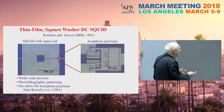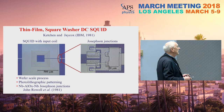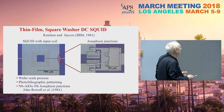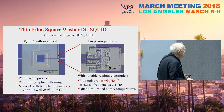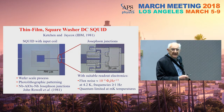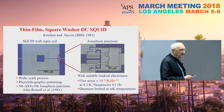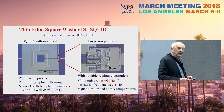These are made today on wafer-scale processes with photolithographic patterning, producing hundreds of thousands on a wafer. With suitable readout electronics at 4.2 Kelvin, a typical flux noise might be 10⁻⁶ flux quanta per root hertz in unit bandwidth. At sufficiently low temperatures, SQUIDs can be quantum limited.